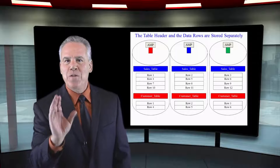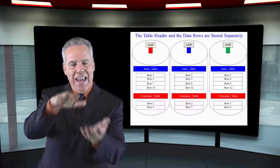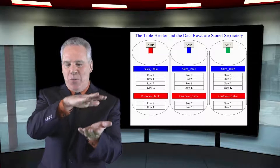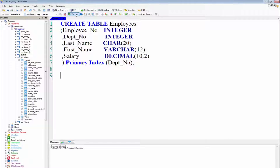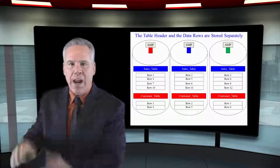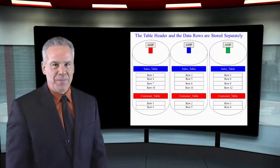When you first create a table, a table header is created with the table name, all the columns, the primary index, and their data types, and then that is copied onto every single AMP instantaneously.